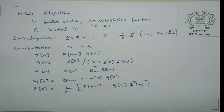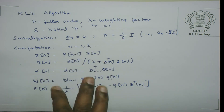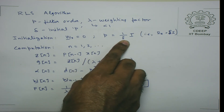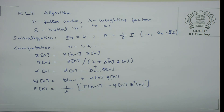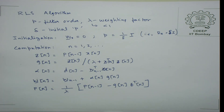The RLS algorithm involves matrix computations — P is an inverse autocorrelation matrix. We avoided explicit inversion by using the matrix inversion lemma, but there are still matrix-level operations. Computationally, it is more demanding than LMS, but it does not use any statistics and is purely data-driven to adaptively update the weights.